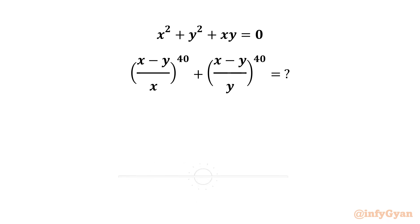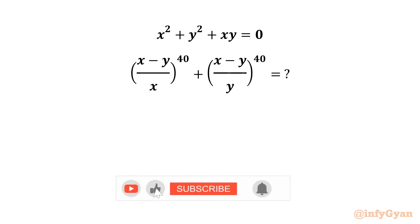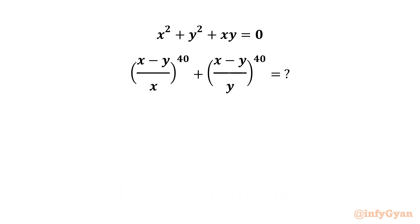Hello my dear friends, welcome back to InfiJAN. Today in this video we have another very interesting question from algebra. We have to evaluate the expression: (x minus y over x) whole power 40 plus (x minus y over y) whole power 40, given that x squared plus y squared plus xy equals 0.